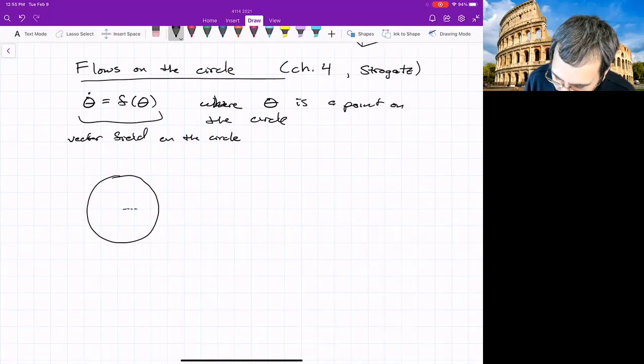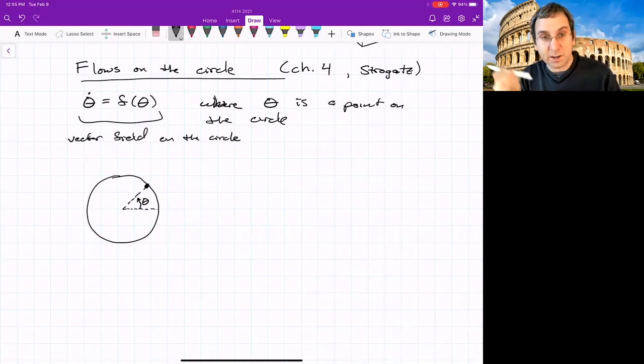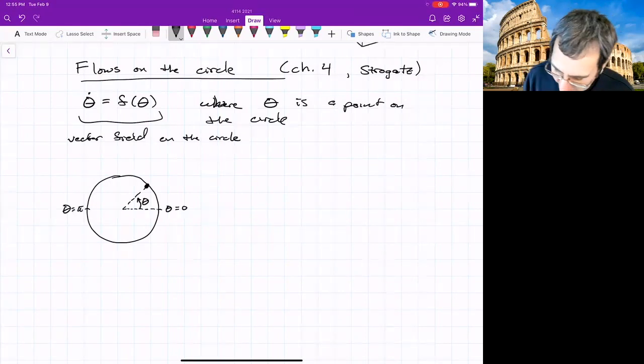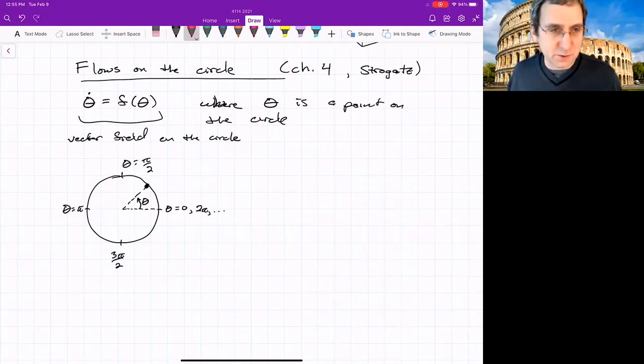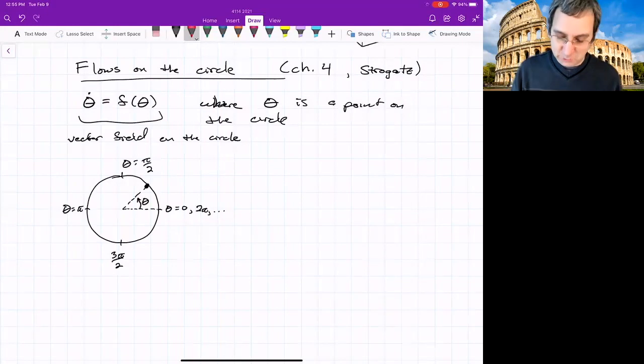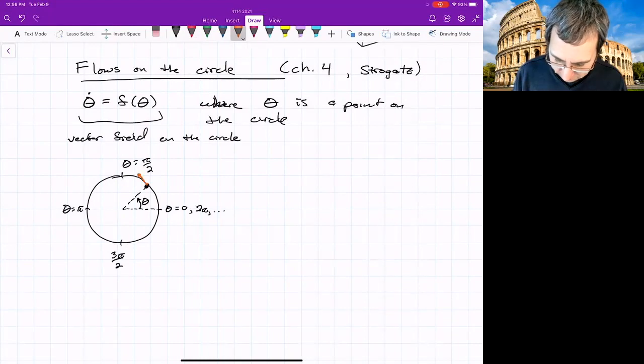And just to make life easy, we'll use the usual convention. So this is different than how we plotted things for the bead in the rotating hoop. If our state is here, theta equals zero is pointing to the right. We'll use radians because that's the natural way to do things. Theta equals pi. So theta equals zero and two pi, anything that's mod two pi, pi over two. And then down here would be negative pi over two or three pi over two. A vector field would mean at each point on the circle, we're attaching a vector that's tangent to the circle. And it describes how things are moving.